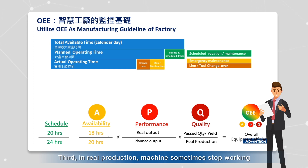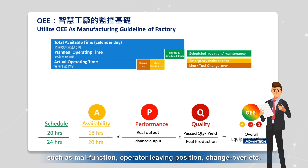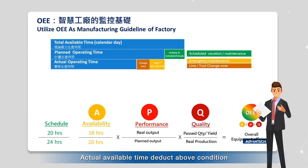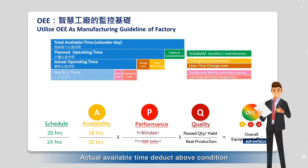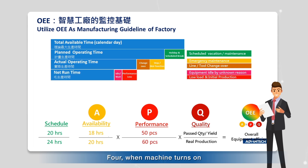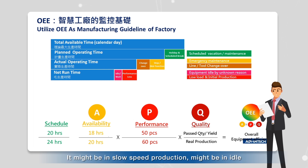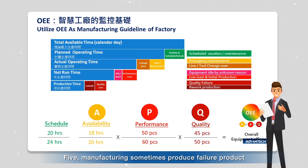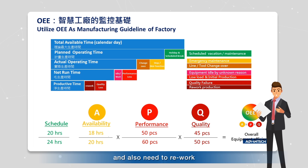Third, in real production, machines sometimes stop working due to malfunctions, operators leaving their position, changeovers, etc. Available time minus these conditions gives us actual run time. Fourth, when a machine is turned on, it doesn't always run at full speed — it might be in slow-speed production or idle. That's what we call performance loss. Fifth, manufacturing sometimes produces defective products that also need rework. That's what we call quality loss.